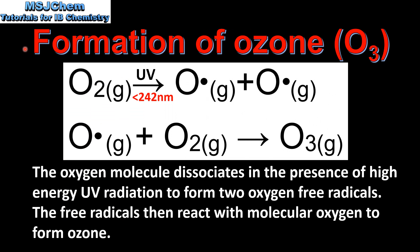Next we look at the formation of ozone. The oxygen molecule dissociates in the presence of high energy UV radiation with a wavelength of less than 242 nanometers to produce two oxygen free radicals. Free radicals are atoms that have an unpaired electron. In the next reaction, the free radicals react with molecular oxygen to form ozone. In this process, potentially harmful high energy UV radiation is absorbed.